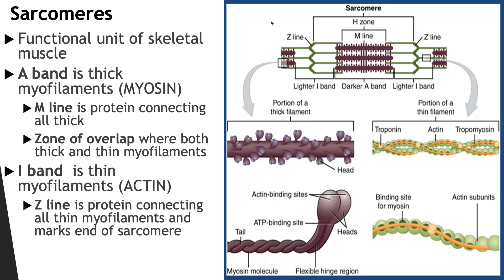The sarcomere is the functional or contractile unit of skeletal muscles. Each myofibril contains approximately 10,000 sarcomeres, each with a resting length of about 2 micrometers. Each sarcomere is composed of a very specific arrangement of myofilaments of actin and myosin. The A-band is a dense region of the sarcomere that contains overlapping thick and thin filaments of both myosin and actin. On either side of the A-band is an area containing only thin filaments called the I-band. In the middle of each A-band is an area containing only thick filaments called the H-band. The M-line, located in the middle of each H-band, anchors the central portion of each thick filament. The Z-line marks the boundaries between adjacent sarcomeres and consists of proteins called actinins, which anchor the thin filaments of adjacent sarcomeres.